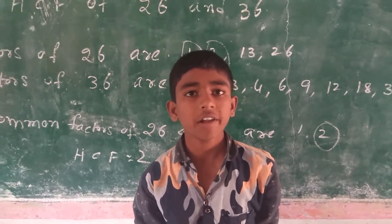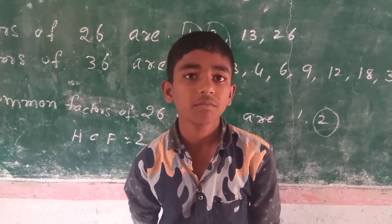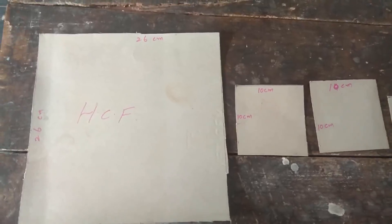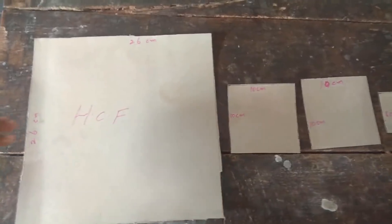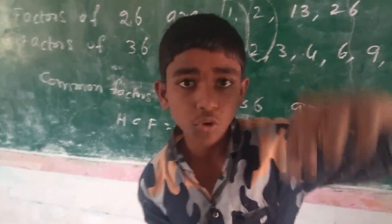Hence our HCF is 2. From the 26 by 36 rectangle I removed: a 26 by 26 square, then a 10 by 10 square, then another 10 by 10 square, then a 6 by 6 square, then a 4 by 4 square, and then 2 equal squares of 2 by 2. Hence our HCF is 2.